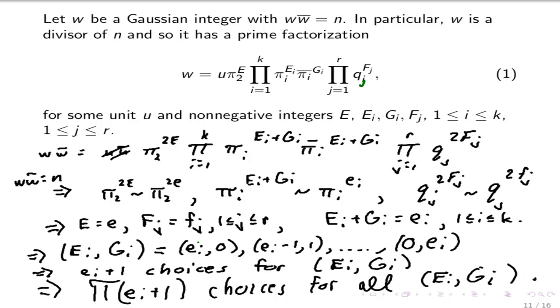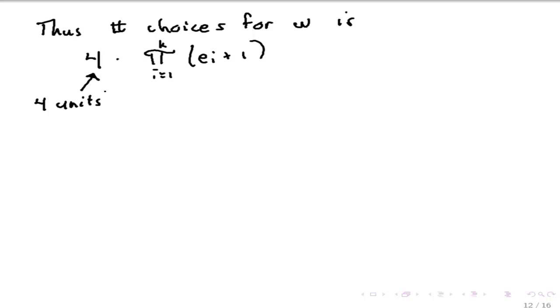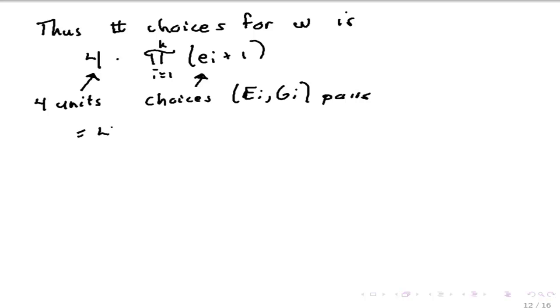And we are done. The total number of choices for W is 4 times ∏(eᵢ + 1) — the factor of 4 comes from the 4 units you get to choose, and the product gives the choices for the (eᵢ, gᵢ) pairs. That product is exactly the formula for the divisor function, so R(n) = 4·τ(n₁). QED.